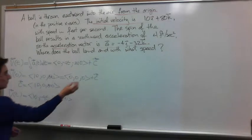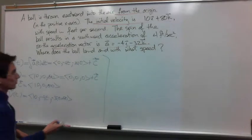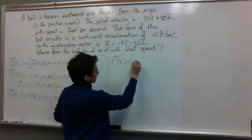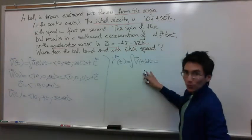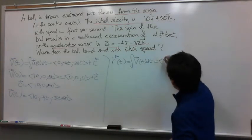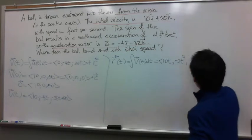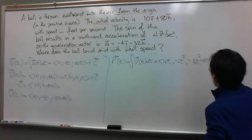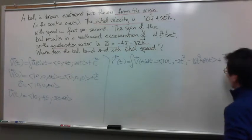After this, I can find my position vector function by integrating this velocity vector function. So that will be equal to 10t, minus 2t squared, minus 16t squared plus 8t. And we don't have to forget again our constant for each component — it's going to be called B, our constant B.